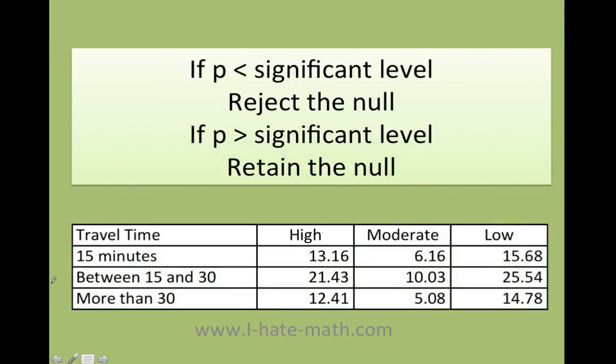If p is less than the significant level, which they give it to you in the problem, in our case it was 5%, we're going to reject the null. If p is greater than the significant level, we're going to retain the null.